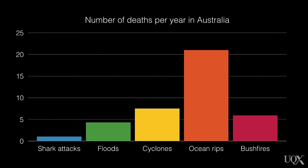The final question was about deaths in Australia per year due to natural disasters and sharks. Data collected by Dr. Rob Brander and colleagues from the University of New South Wales shows average deaths per year in Australia since 1852. Sharks kill only one person on average per year. Floods account for 4.3 deaths, bushfires 5.9, and cyclones 7.5. Ocean rips account for the most deaths — an average of 21 per year.